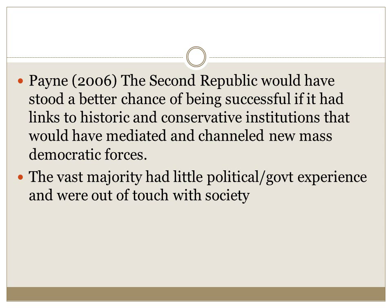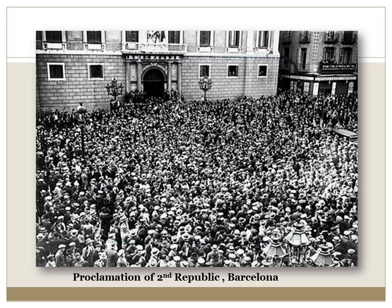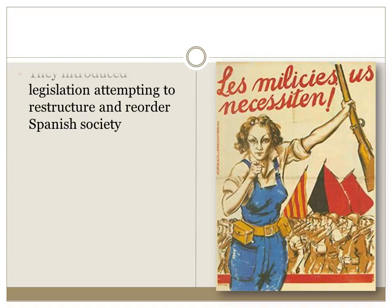Here we have the proclamation of the Second Spanish Republic in Barcelona — a hugely joyous occasion, especially for Catalonia given what it represented for regional nationalism. The Republicans introduced legislation to restructure and reorder society, feeling they knew what was wrong. They needed a government that was more responsive and modern, to bring Spain into the 20th century with 20th-century ideology. It was an extreme move to the left with nothing to moderate it.